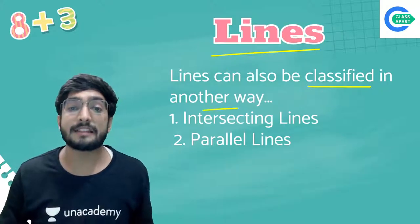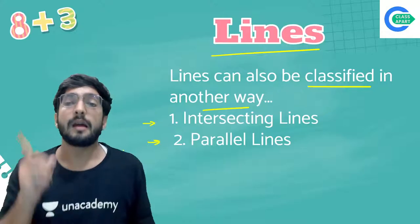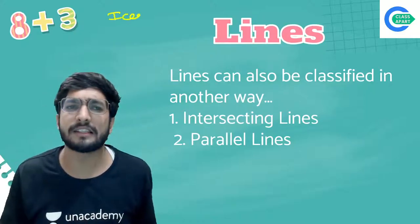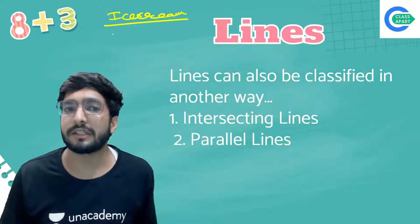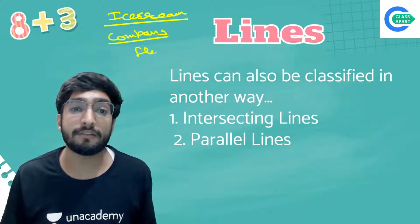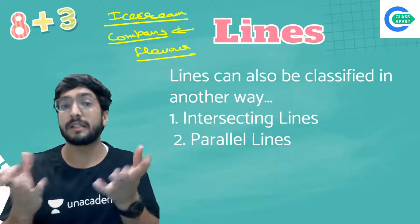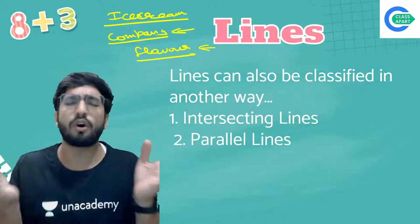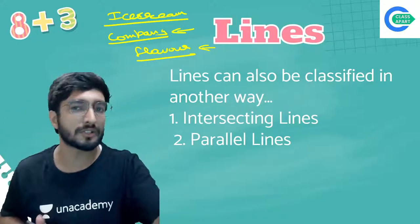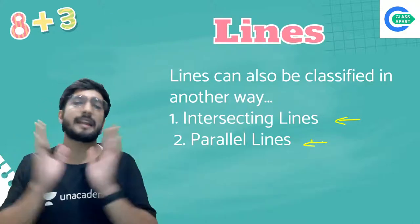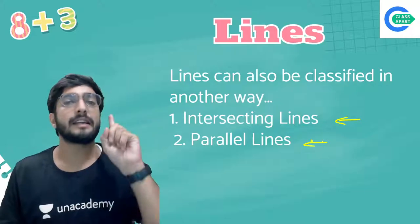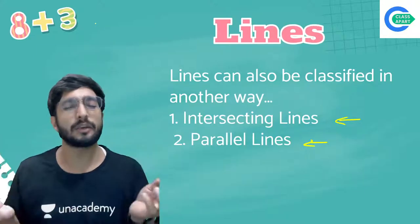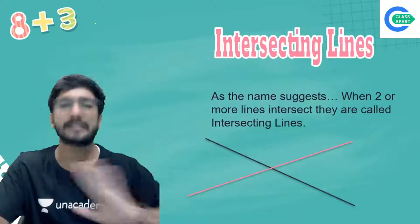Lines can also be classified in another way — based on whether they intersect. Just like ice cream can be classified by company or by flavor, lines can be classified by their intersection. There are two types: intersecting lines and parallel lines. Lines that intersect each other are called intersecting lines; lines that do not intersect are called non-intersecting or parallel lines.